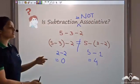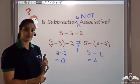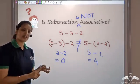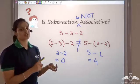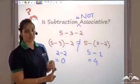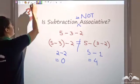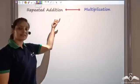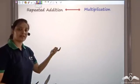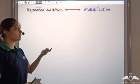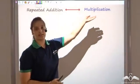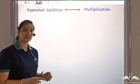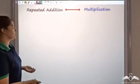So we have seen that addition is commutative and addition is associative. Subtraction is not commutative and subtraction is not associative. Now, from addition, repeatedly adding the same thing gives us multiplication, so let us see whether multiplication is commutative and associative.